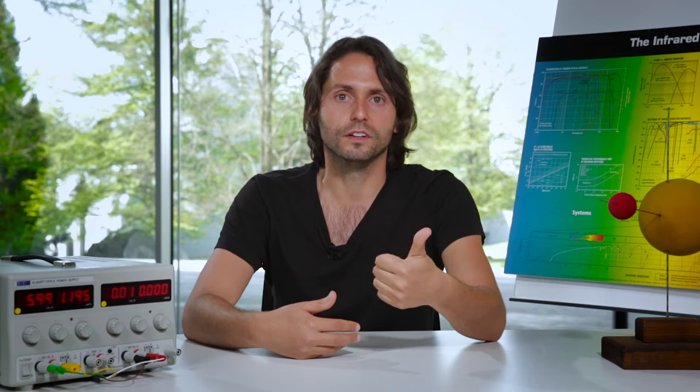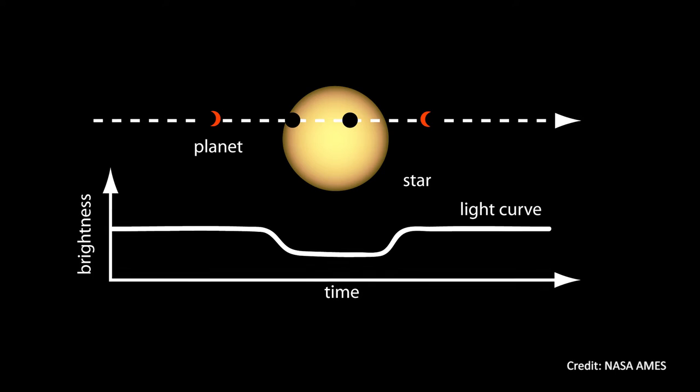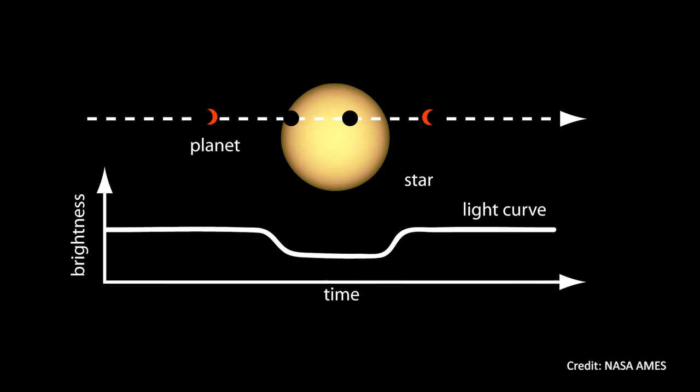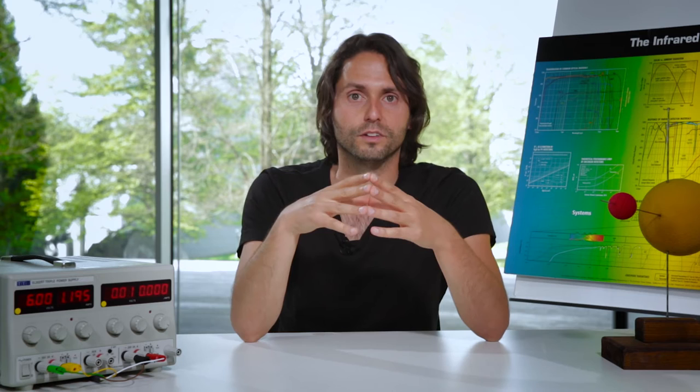The vast majority of extrasolar planets cannot be directly imaged, so we need some indirect methods. One very prosperous technique is the transit technique, and the other is the radial velocity technique. The transit technique monitors the brightness of the star, and periodically the star is occulted by a planet and we can measure a drop in its brightness. With the radial velocity technique, we measure the spectrum of the star as it moves because of the orbiting planet.